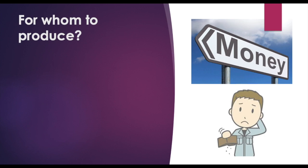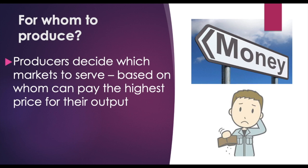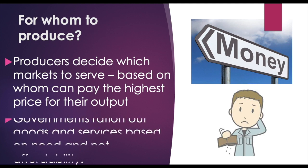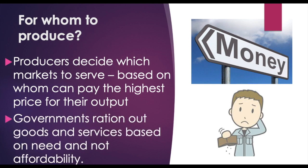The third resource allocation question is: for whom to produce? Because we cannot satisfy the wants of the entire population, producers have to decide which market, which segment of society, and which group of consumers to provide goods and services to. A profit-making private sector enterprise will distribute their goods and services to consumers based on their ability to pay. On the contrary, governments are going to ration out some public goods like education and healthcare based on people's need and not on affordability.